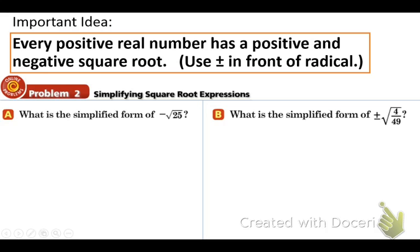Here's an important idea for us to remember. Every positive real number has a positive and negative square root. And we need to use this symbol right here, plus or minus, in front of the radical. And you'll see me doing that in these examples below.